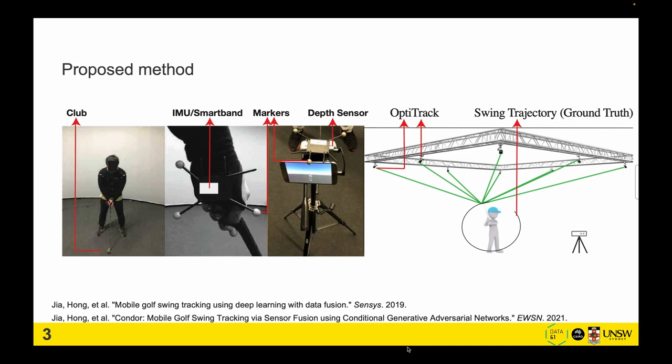We've done previous initial work using the ground truth, for example, OptiTrack, to train the framework to do swing tracking prediction. However, the previous work still lacks information on whether the proposed architecture is optimal and also lacks information about different domains, for example, subjects, devices, and sports.